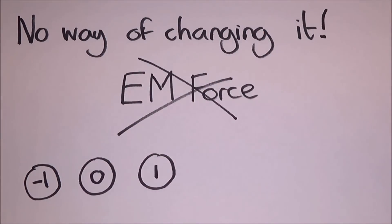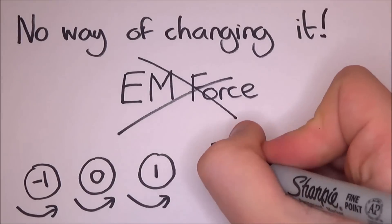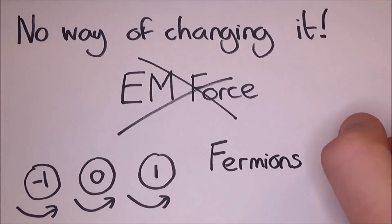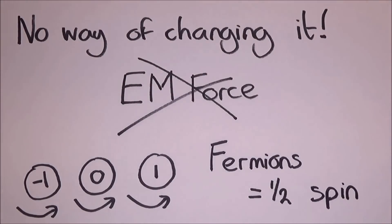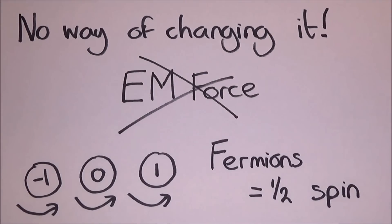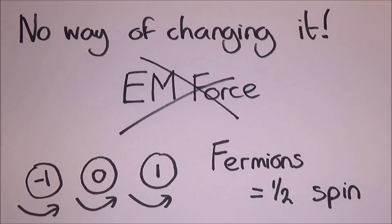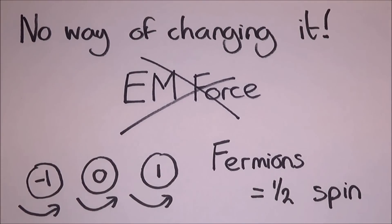Now fermions will all have half integer spins, that is one of the rules for being fermions. While bosons will all have integer spins. This means that fermions can have a half, three halves, five halves, etc. But never one, two or three.